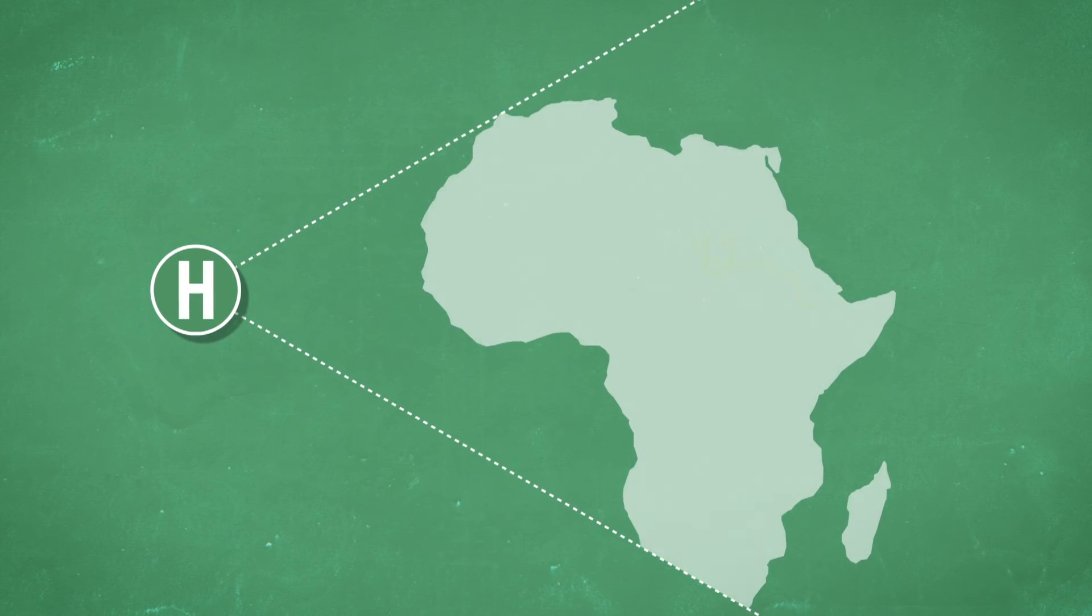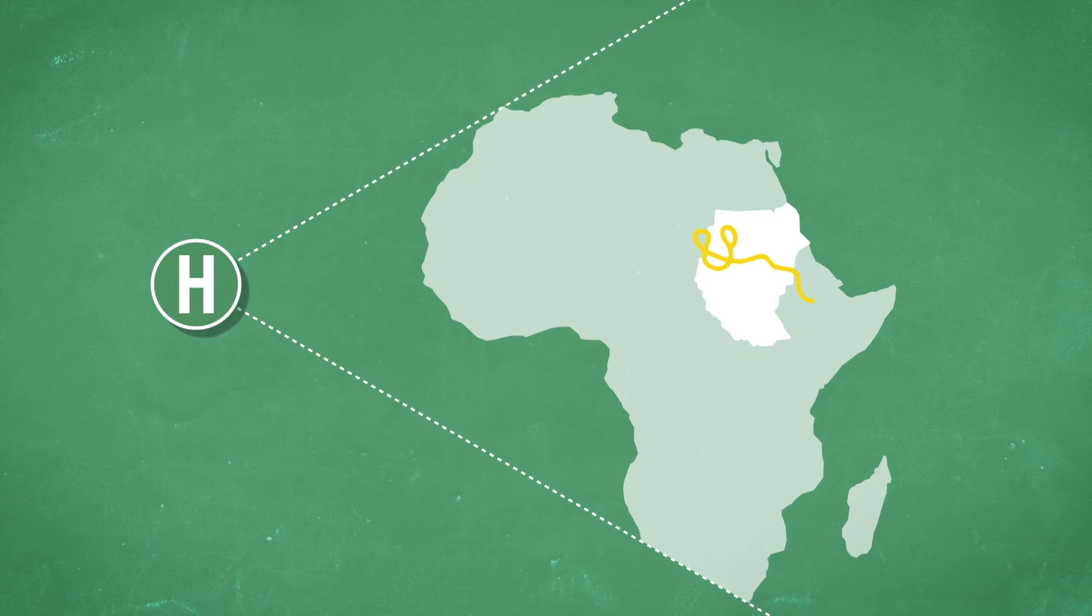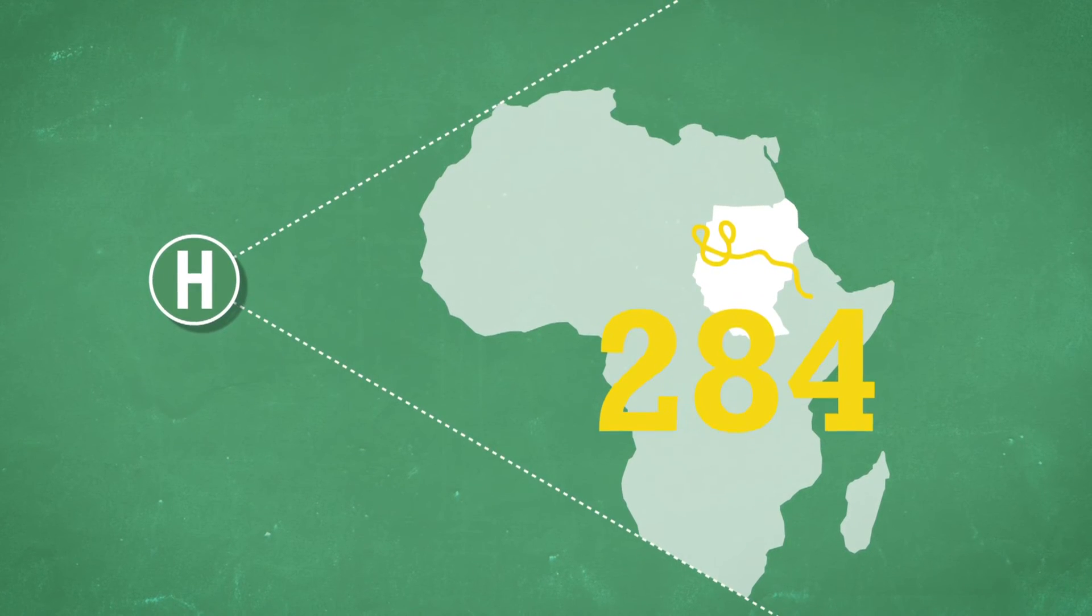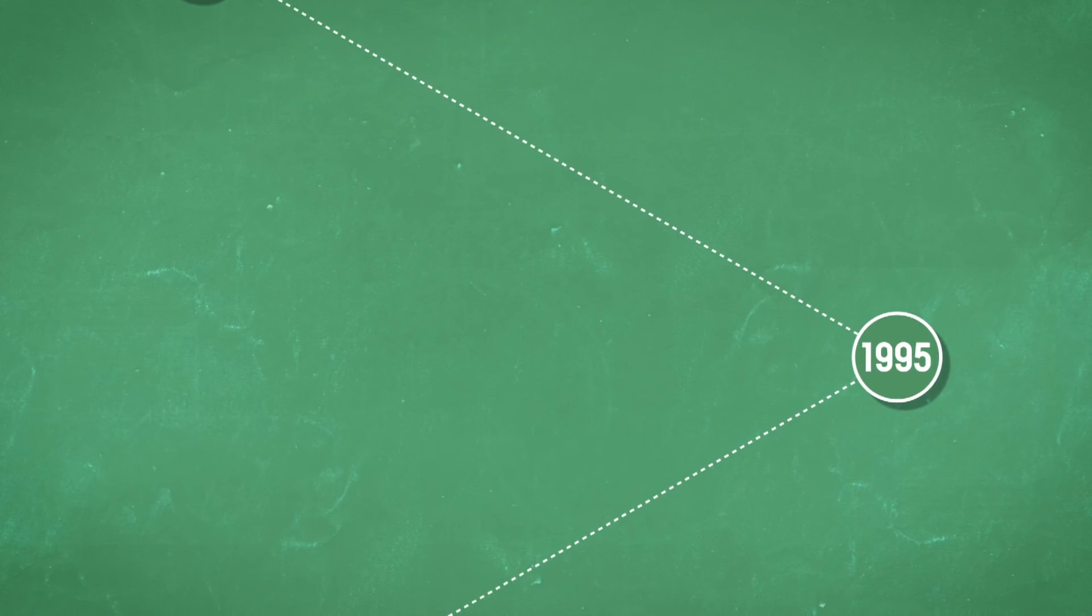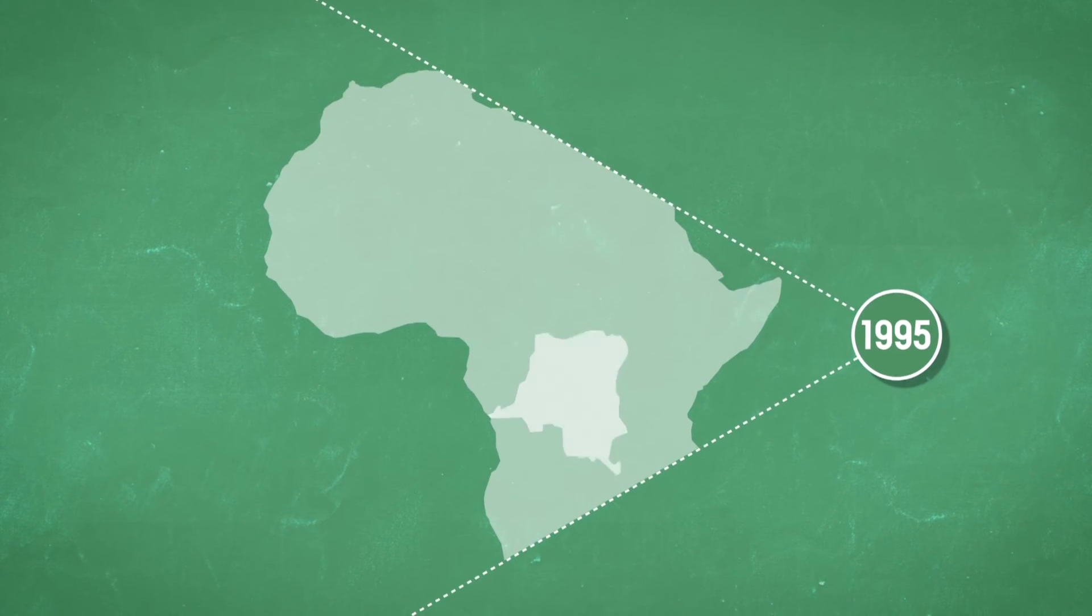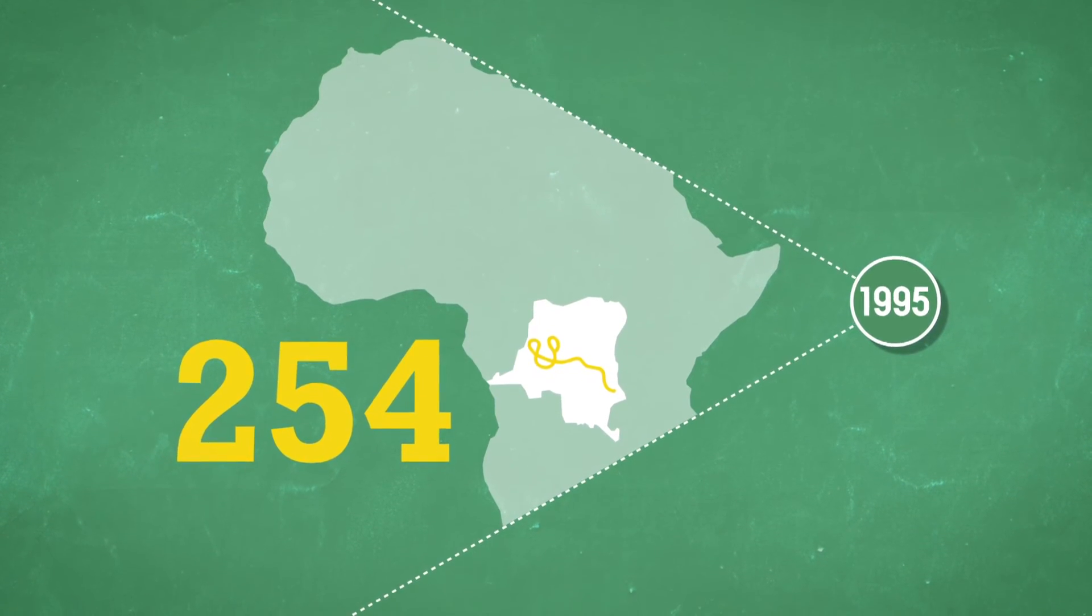The same year, another strain of the Ebola virus hit Sudan. 284 people died. In 1995, in Kikwit in Zaire, 254 people succumbed to the disease.